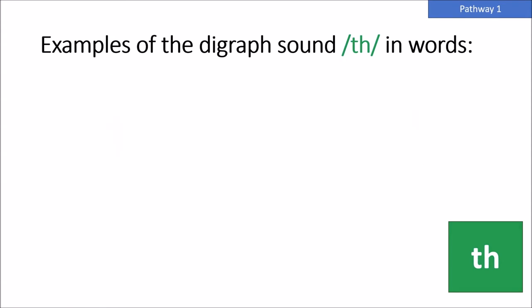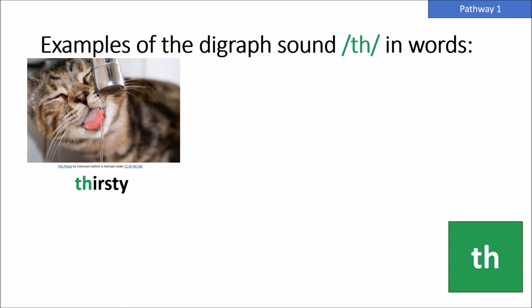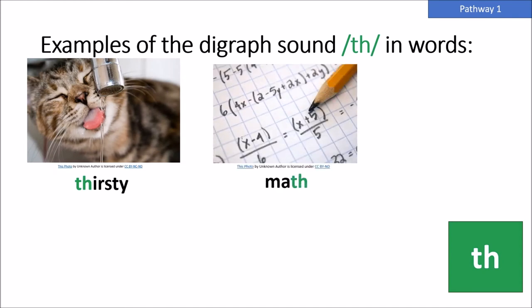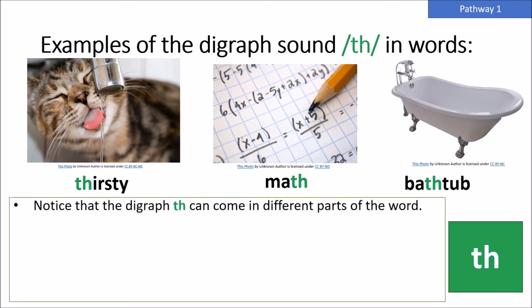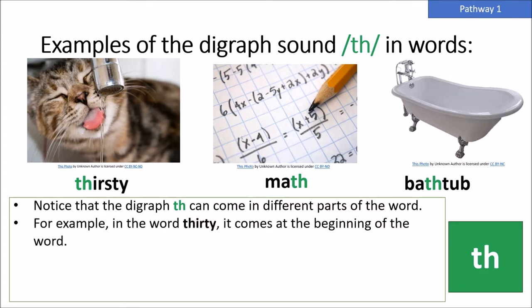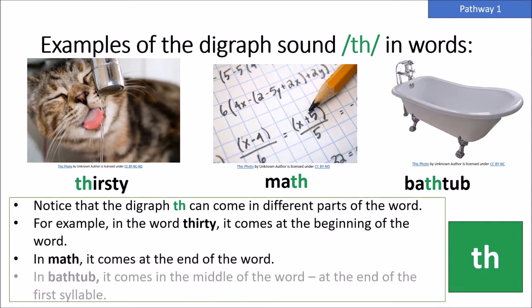Examples of the digraph sound 'th' in words: thirsty, math, bathtub. Notice that the digraph TH can come in different parts of the word. For example, in the word thirsty, it comes at the beginning of the word. In math, it comes at the end of the word. And in bathtub, it comes in the middle of the word at the end of the first syllable.